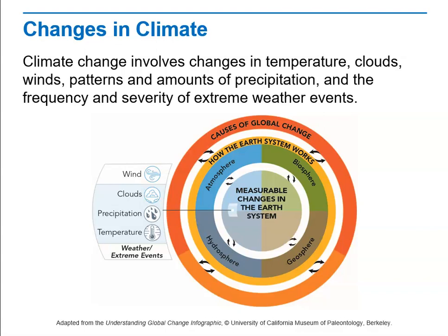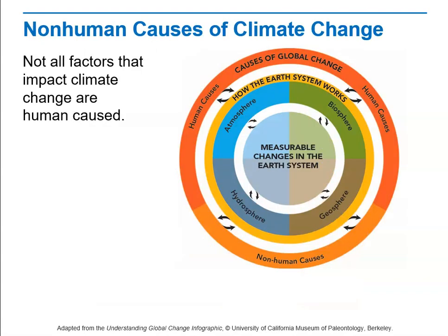Here's our earth systems model again. Changes in climate impact both the atmosphere and hydrosphere as we can see indicated in this model. These changes occur in the center of the circle labeled measurable changes in the earth system. All the items in the center of the circle can be measured qualitatively — they don't necessarily get measured with exact numbers, but they are observable.